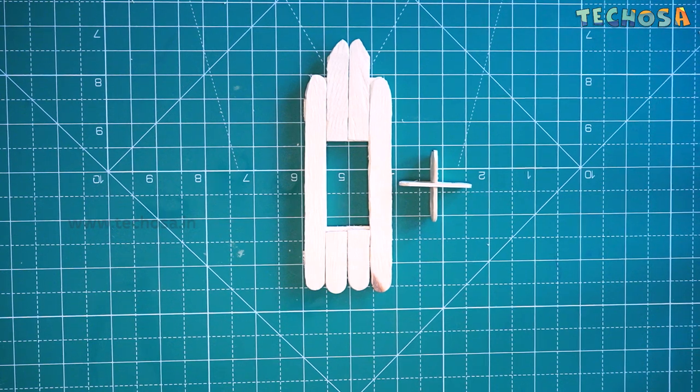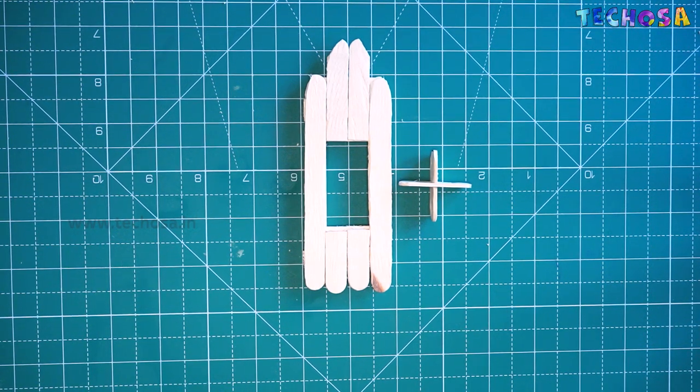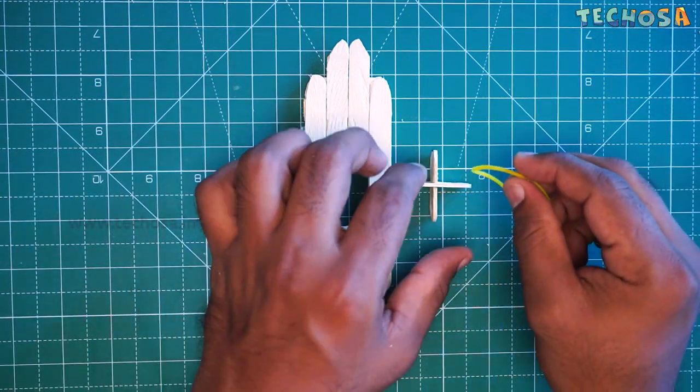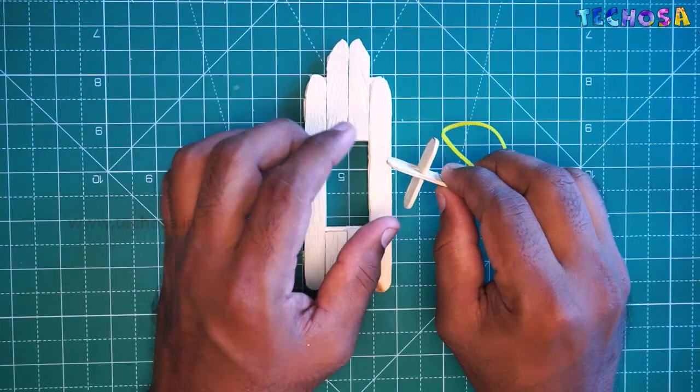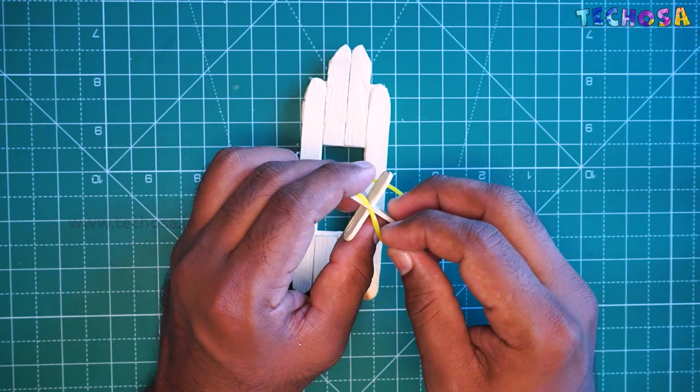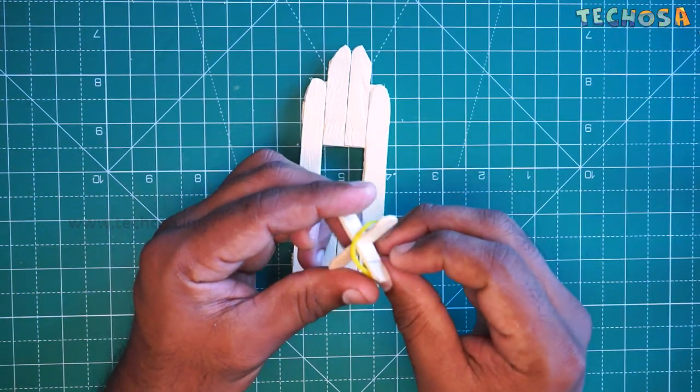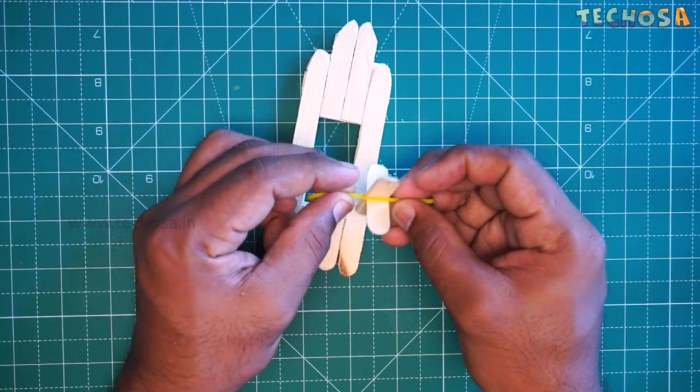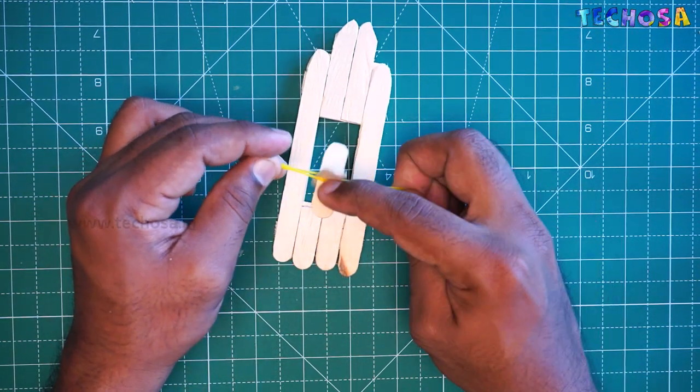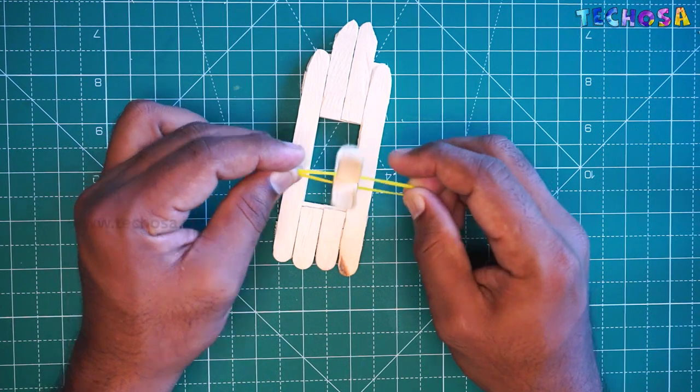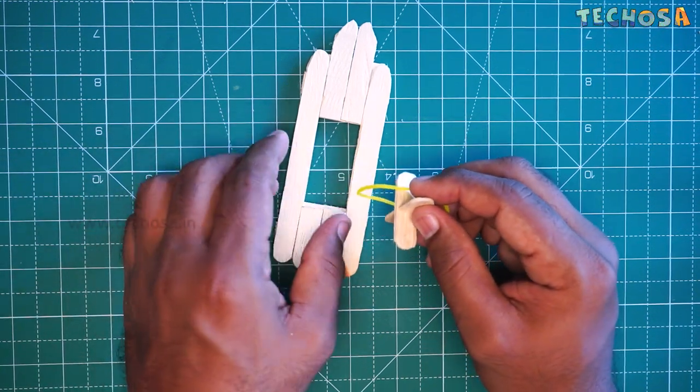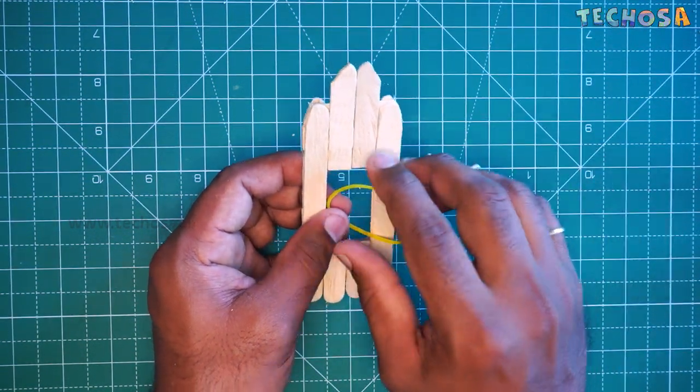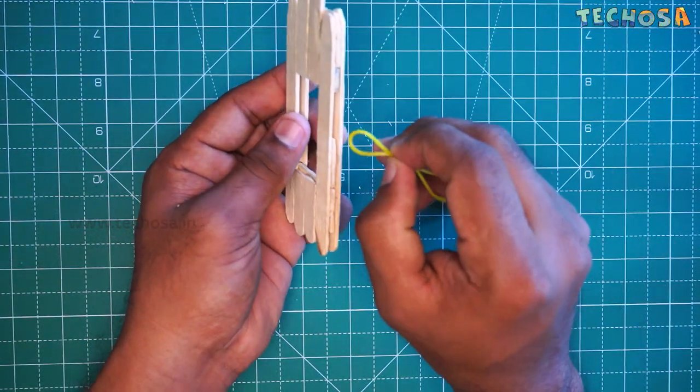Now take a lengthy rubber band and fix the pedal to it. To do this first pass the rubber band through both the sides and then attach it to the center cutting of the back portion. Let us insert the rubber band inside the board and fix it in this way.